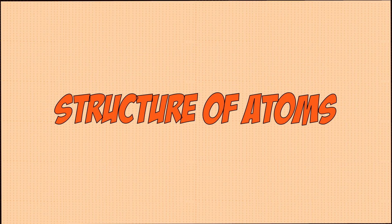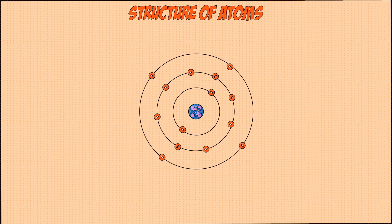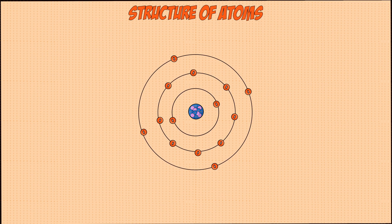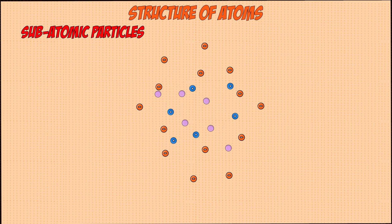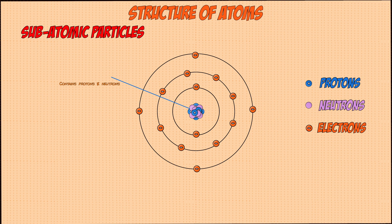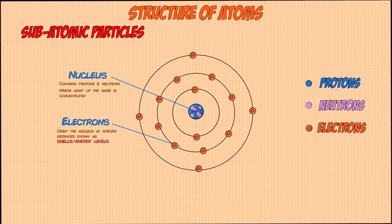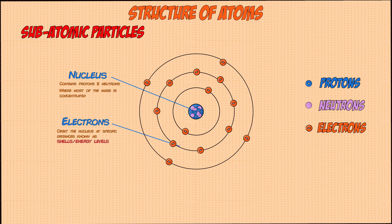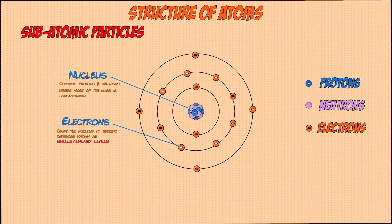Let's take a look at the structure of atoms. Everything in the universe is made up of atoms, and the atoms themselves are made up of what we call subatomic particles. There are three types of these subatomic particles which are known as protons, neutrons and electrons. Protons and neutrons are both found in the center of an atom in what we call a nucleus, which is where most of the atom's mass is concentrated. Electrons are found around the nucleus orbiting it at specific distances, which we call electron shells or energy levels.